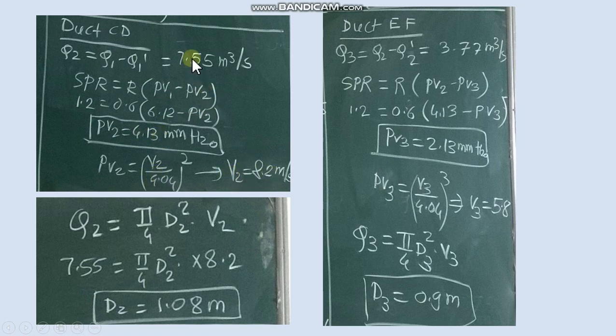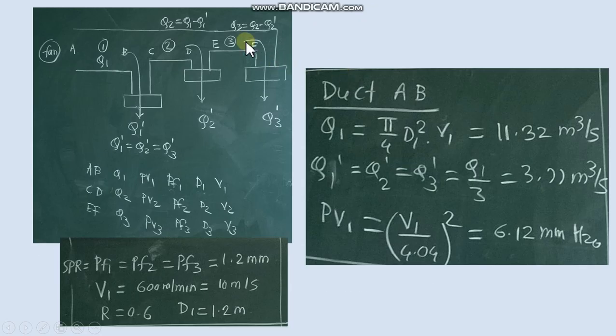So this velocity and this discharge in CD duct we get diameter of duct CD. Then duct EF, Q3 discharge here will be subtraction of discharge CD duct minus this Q2 dash.